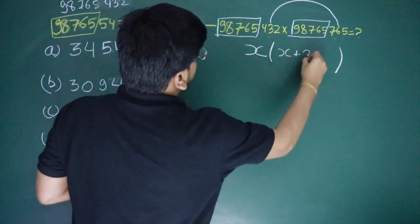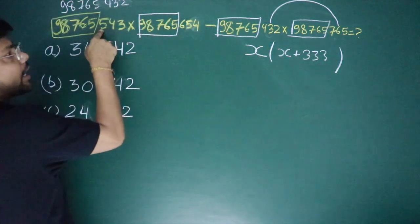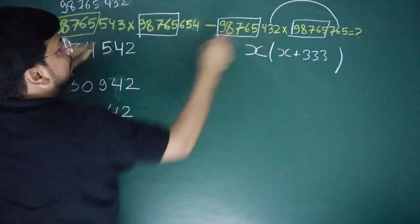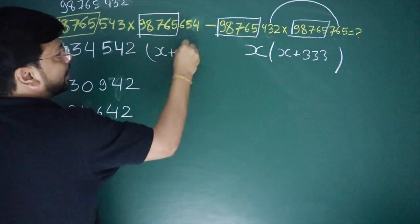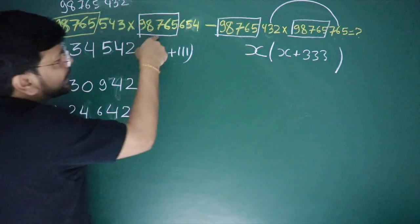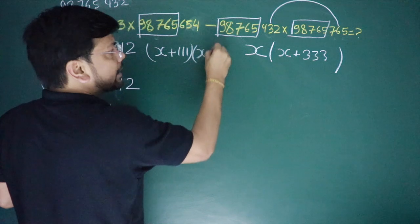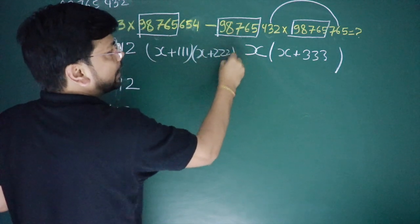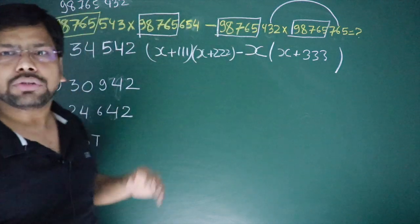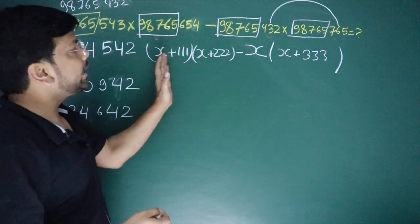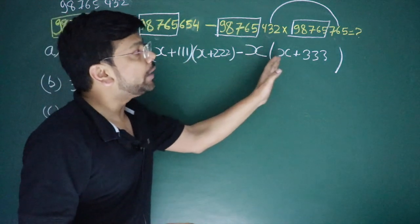This x is 3. Here, see — here and here and here. This x is 1, 1, 1. Then see — here there is 2, here there is 4. This x is 2. And here there is a minus sign. The question you saw of simplification was actually a question of algebra: x plus 1 into x plus 2 minus x into x plus 3.